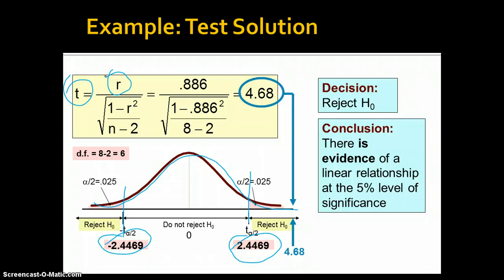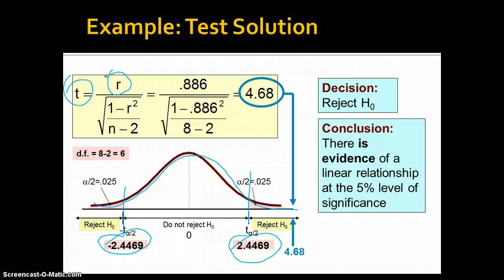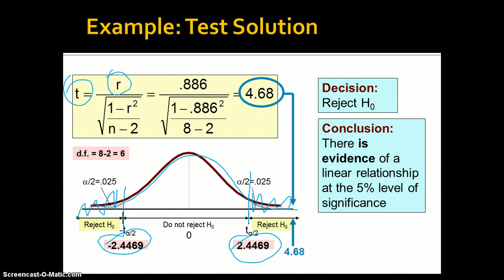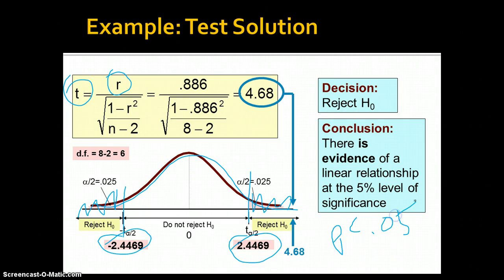If we get a calculated value that is higher than our critical value, we get to reject the null hypothesis because it falls in the extreme areas. As we can see here, there is evidence of a linear relationship at the 5% level of significance — p is less than 0.05. So we can say there is a statistically significant association between tree height and trunk diameter in our example.